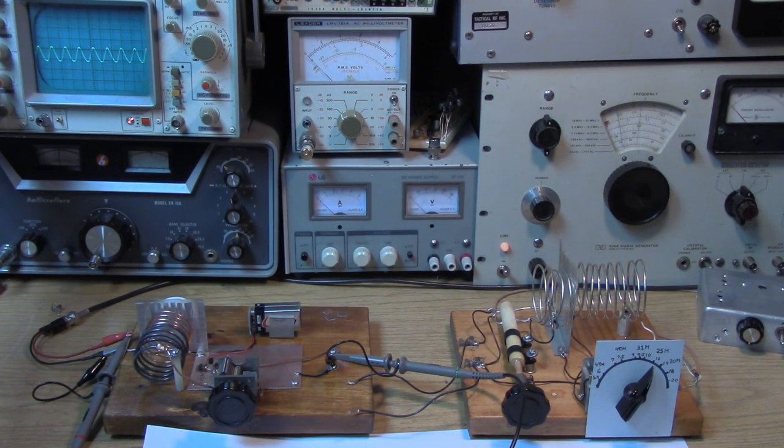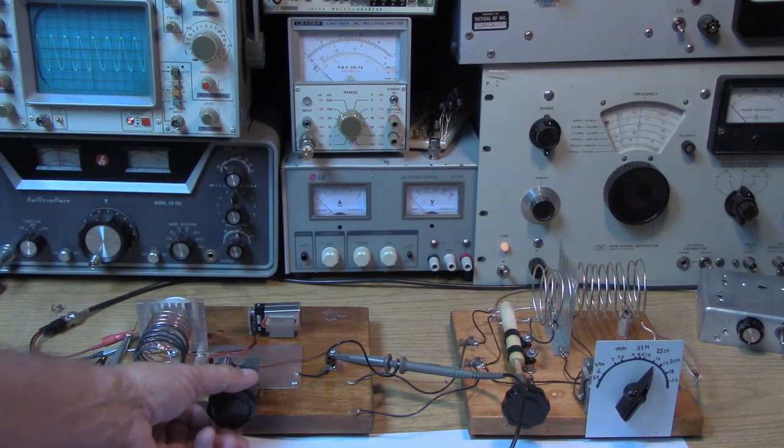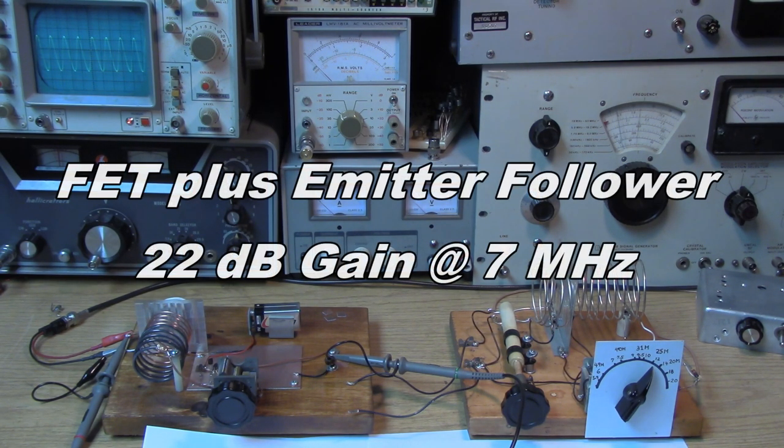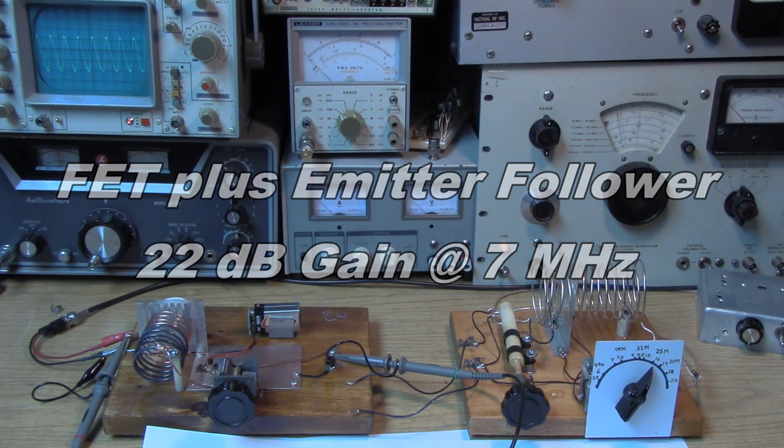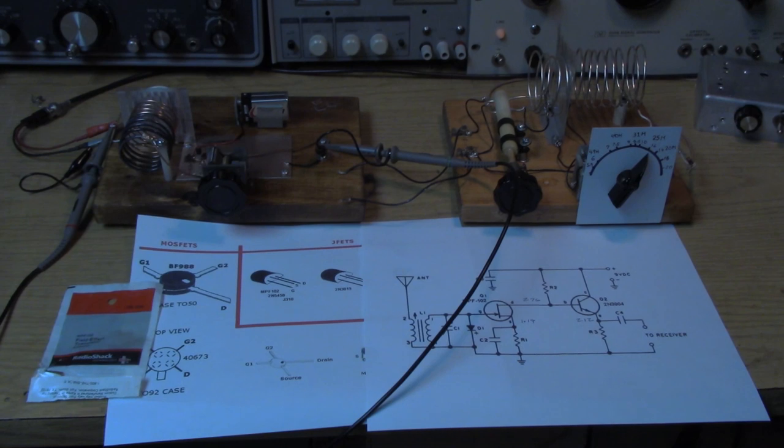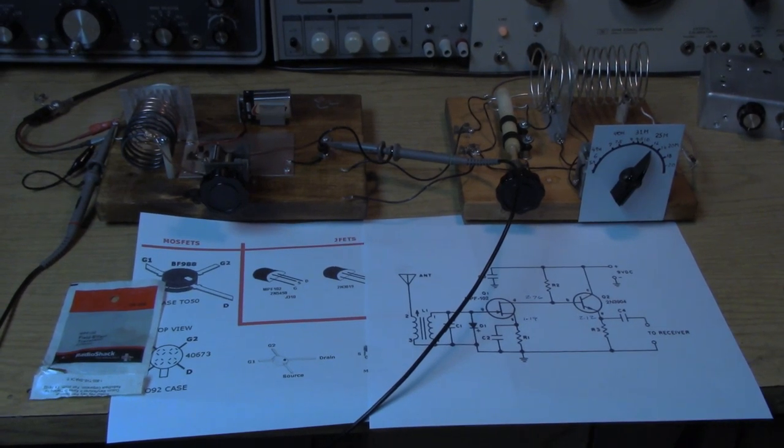As you can see, it's much lower. I get about 62 millivolts. 5 millivolts in, 62 out. That comes out to a gain of just about 22 dB. We've lost 10 dB. I hope everybody realizes that the JFET does not have as much gain as the MOSFET.